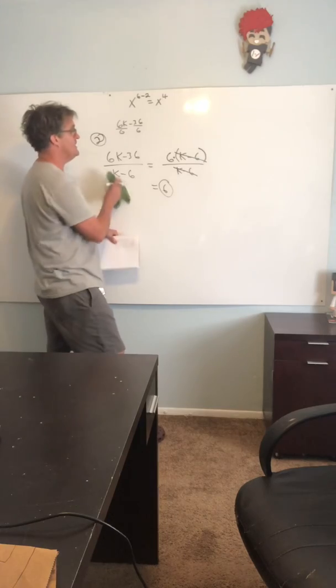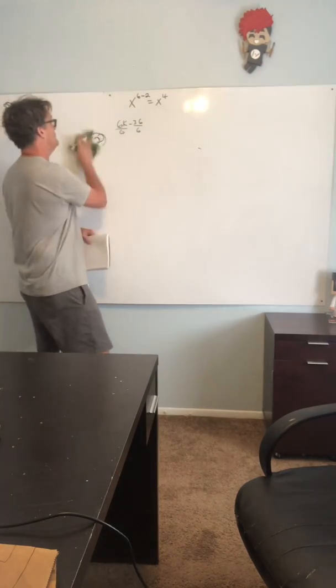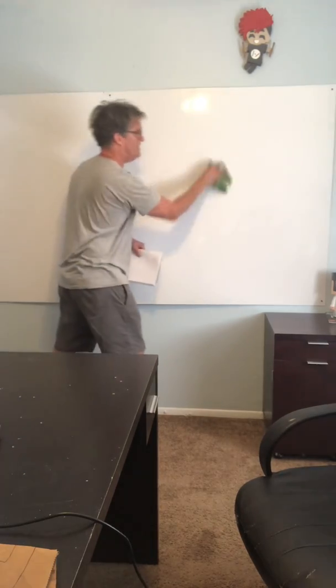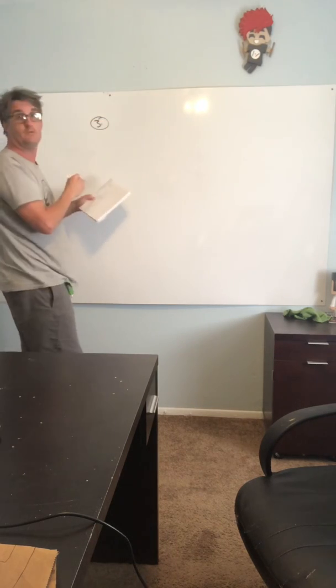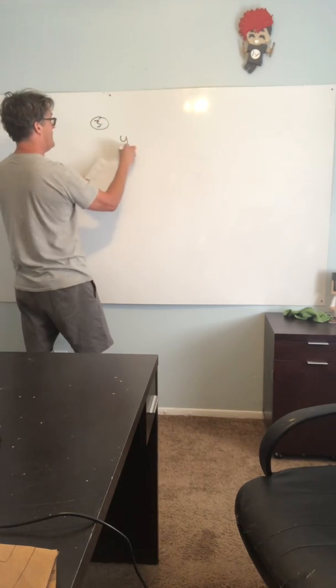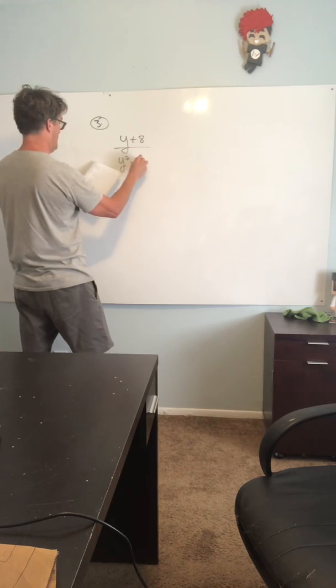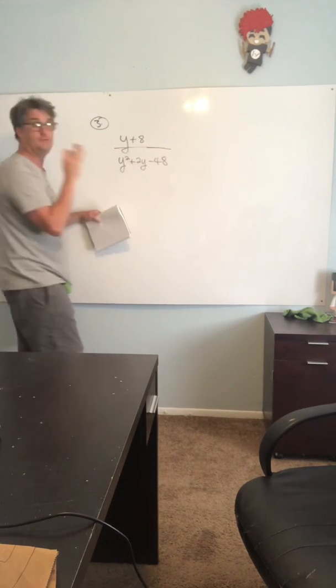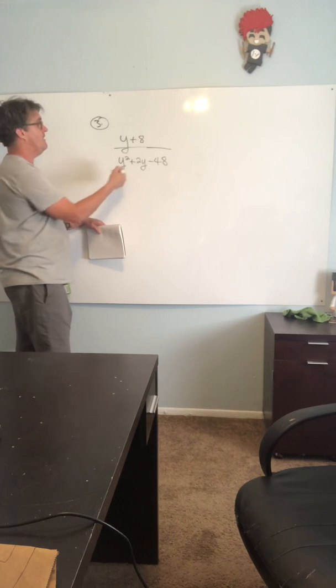Here we go, numero tres. I hope this is a fun one. Number three: I've got y plus 8 over y squared plus 2y minus 48. Again, you cannot do any canceling or simplifying right now. You got plus signs and minus signs separating these terms. You might be thinking, drop those y's? Never.